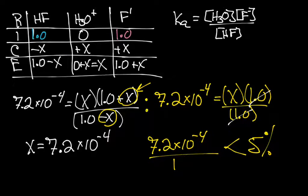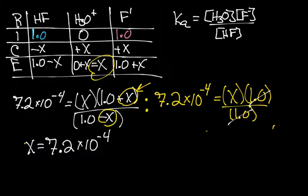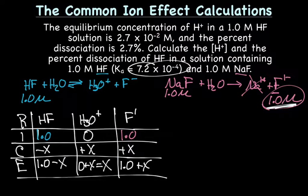And so now plugging that in because we want to know our H+ or H3O concentration. So if we plug that into x, it's the same. So that equals our concentration of H3O. So now let's go back and look at the concentration of H's when we just have HF. And that concentration is 2.7 x 10^-2, which is a lot more.